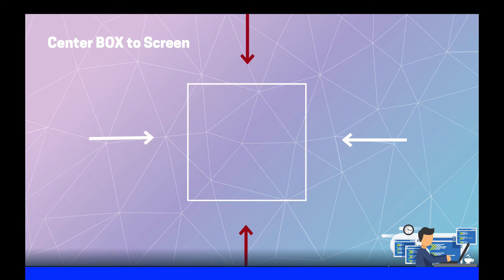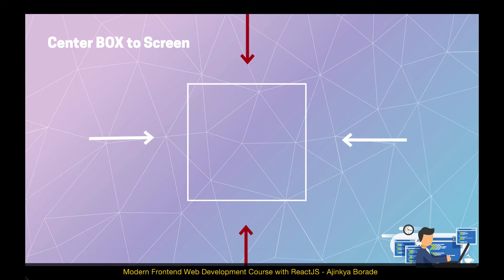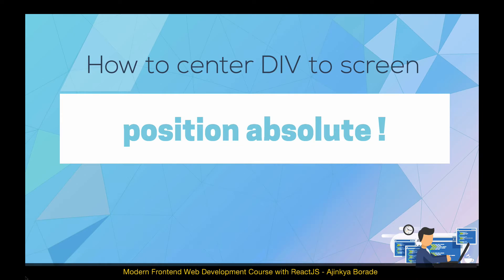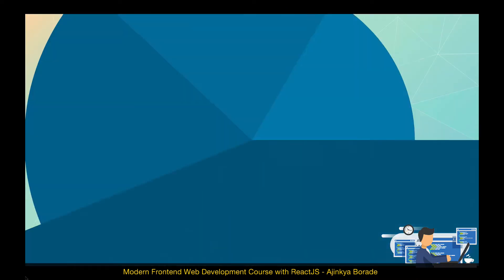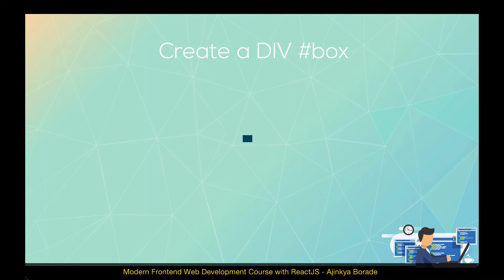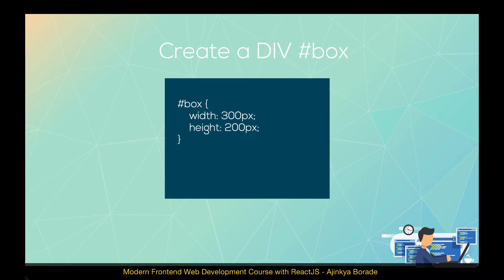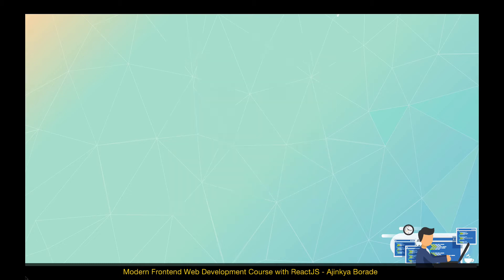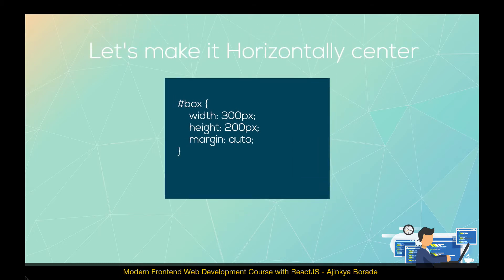We are going to center the div on screen using the position property. Let's create a div with an ID of 'box' and set any width and height as you wish. First, to make it horizontally centered, we are going to use margin auto.